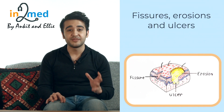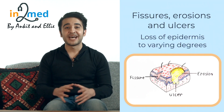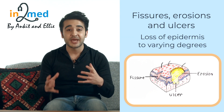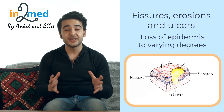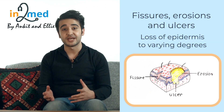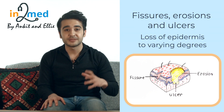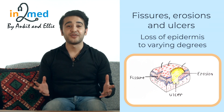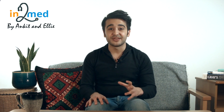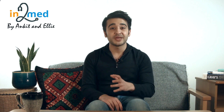The last group is fissures, erosions, and ulcers — all lesions that differ by the extent to which they penetrate through the epidermis. A fissure is a crack from the epidermis to the dermis. An erosion is partial loss of the epidermis. And an ulcer is a full thickness loss of the epidermis. We appreciate that's a lot of information to take in, but learning these key terms will make identifying any lesion much easier.